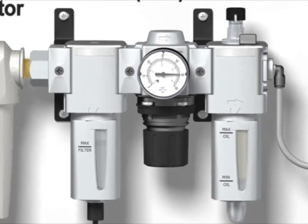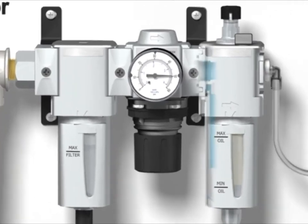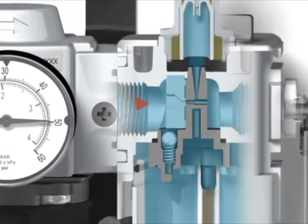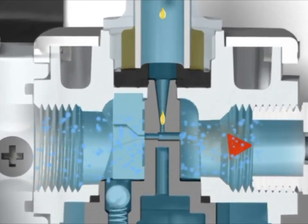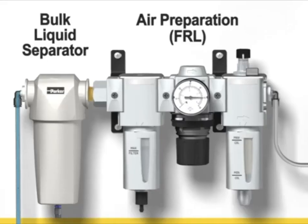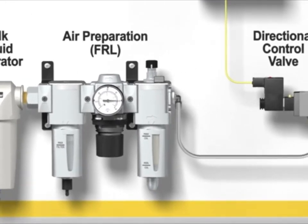Finally, in specific applications such as air motors or pneumatic tools, a lubricator can be added to distribute a fine mist of lubricant into the compressed air to help lubricate downstream components. Now that the compressed air is clean, dry, and set to the correct pressure for the application, the next step is to direct it where to go to create motion.